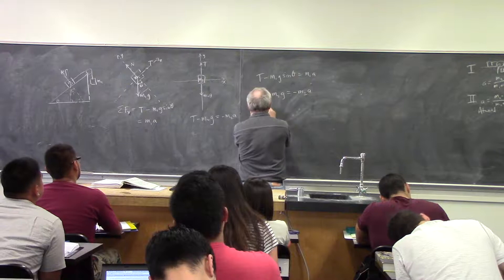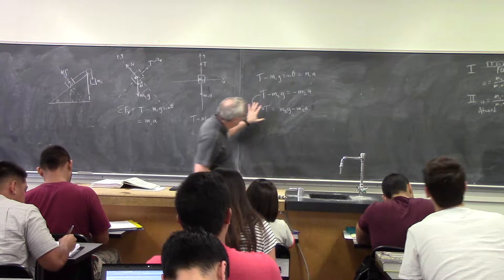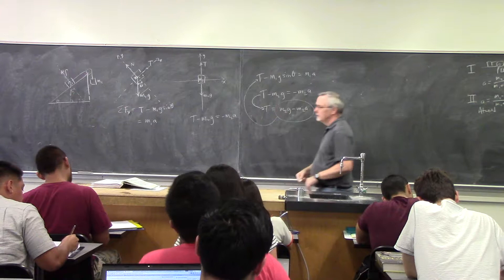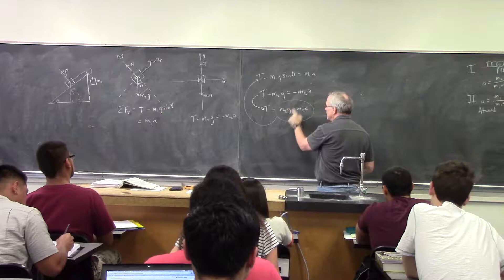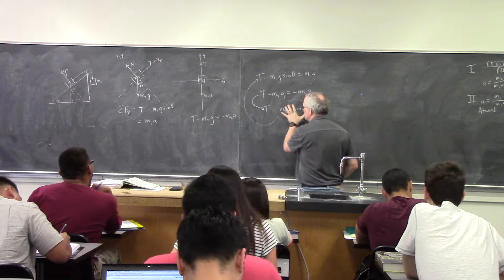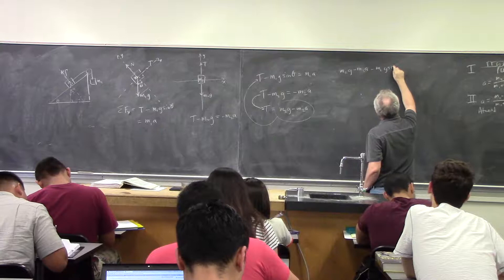I'm going to solve this for T: T equals m₂g minus m₂a. I just isolated my T. I'm going to take that expression and put it into the first equation. I took this and rewrote it as T equals positive m₂g minus m₂a. That gives me: m₂g minus m₂a minus m₁g sine theta equals m₁a.